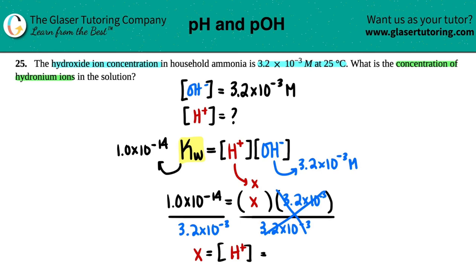Bada bing, bada boom. Calc time. 1 times 10 to the negative 14th divided by 3.2 times 10 to the negative 3. Two sig figs, if we care about them at all at this point.